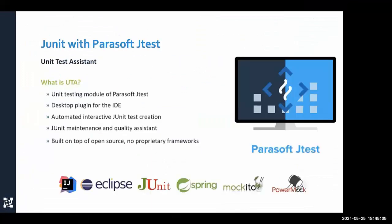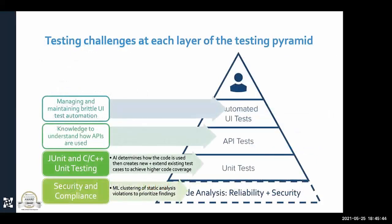To summarize, the Unit Test Assistant is part of our Jtest offering — a plugin for Eclipse and IntelliJ. It generates tests in JUnit 4 and JUnit 5 format, supports Spring, uses Mockito and PowerMock, and is completely independent from our technology. Once generated, tests can be run anywhere: in your pipeline, maintained independently, or improved further using our tooling.